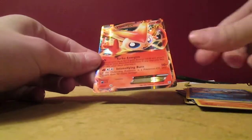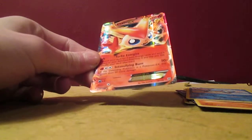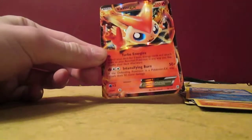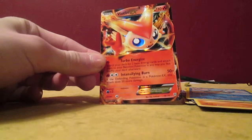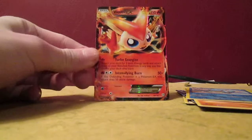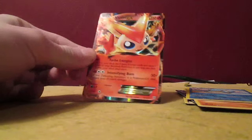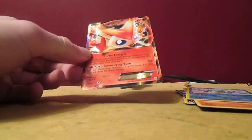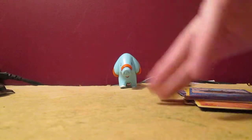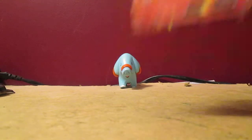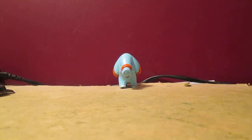And a Victini EX! Nice! That's pretty cool actually. That makes up for the last ten packs not getting a holo. I actually did see it when I opened the pack but didn't say anything because I don't want to spoil it for anybody. Still no holo but this is better than a holo, so that's very awesome. Victini EX in the first pack, I'll take it.